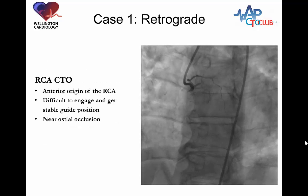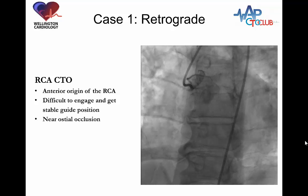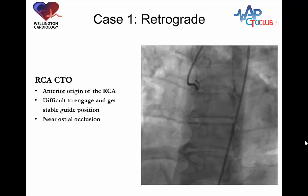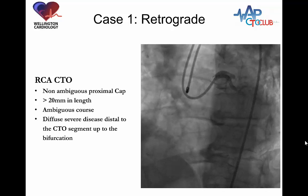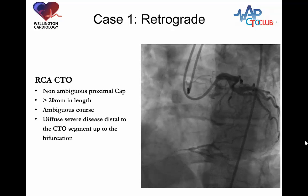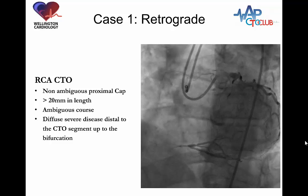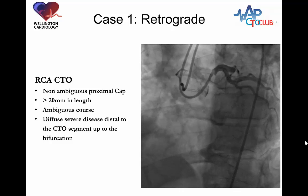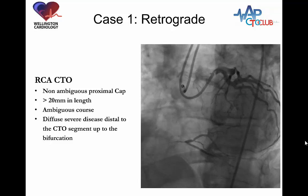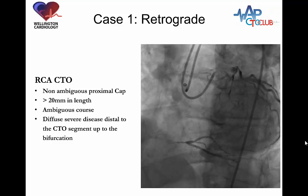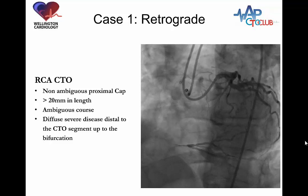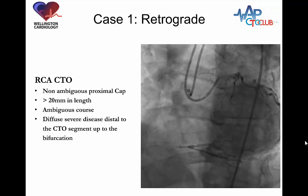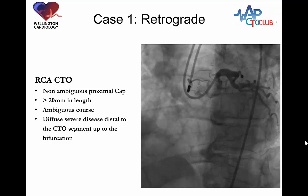Looking at the first angiogram, there is a near-osteal occlusion of the right coronary artery. The right coronary artery has an anterior takeoff which makes engagement difficult — this is an AL-1 guide. Bilateral injections demonstrate a long CTO with a diffuse segment of disease, a narrow channel just after the distal cap extending all the way to the bifurcation. Given the near-osteal location, the long segment of disease, and diffuse distal disease, this would be a retrograde case in any algorithm.